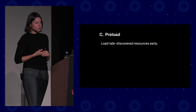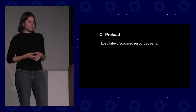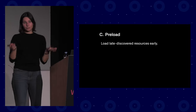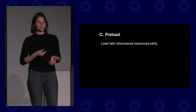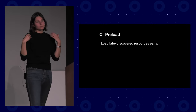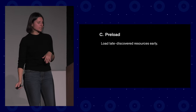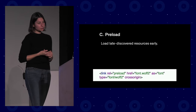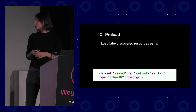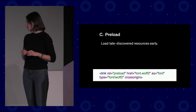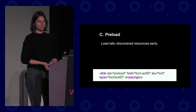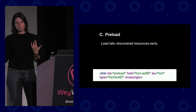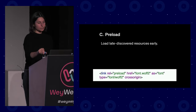The third resource hint is preload, which helps load late-discovered resources early. The classic example: you have CSS, and only inside that CSS is a font referenced that will be used on your website. Use preload to let the browser know the font is needed early — otherwise you get a flash of unstyled or invisible text. To do this, add the preload flag, crossorigin attribute, and specify the resource type. It must be tested, because if there's no delay for the resource to be downloaded, preload can cause a double download — which we definitely don't want.